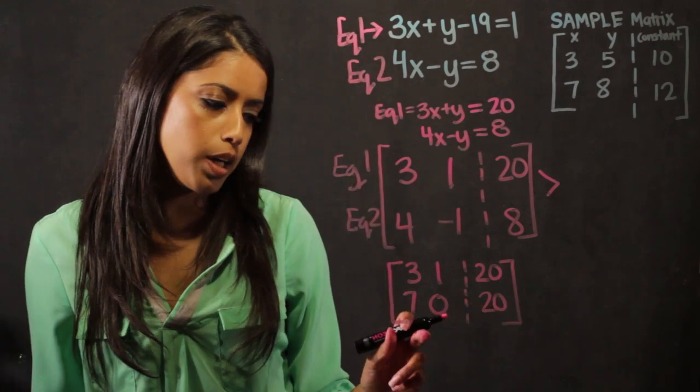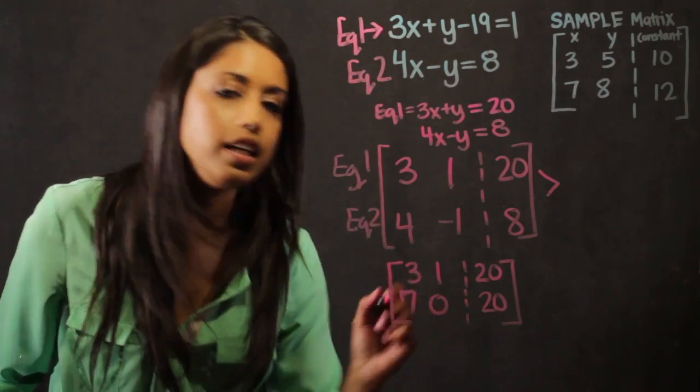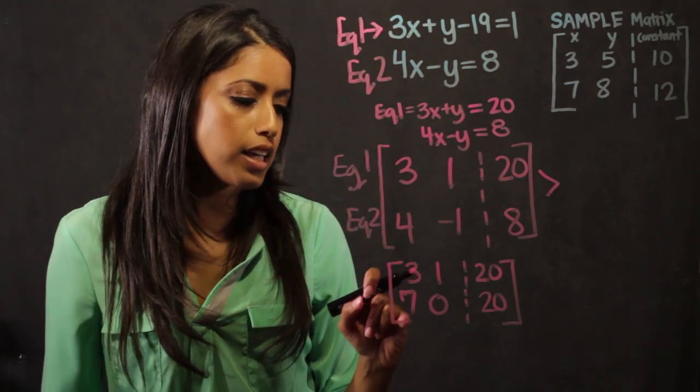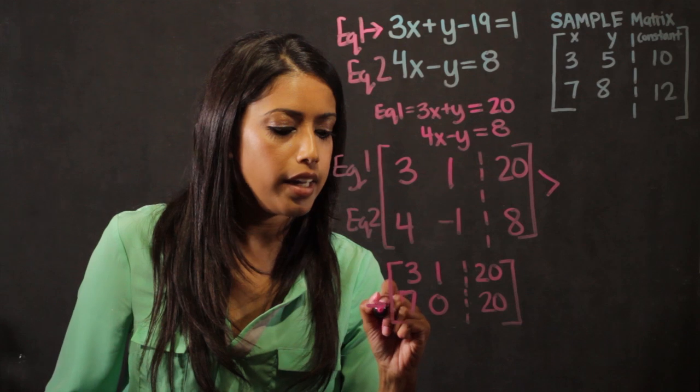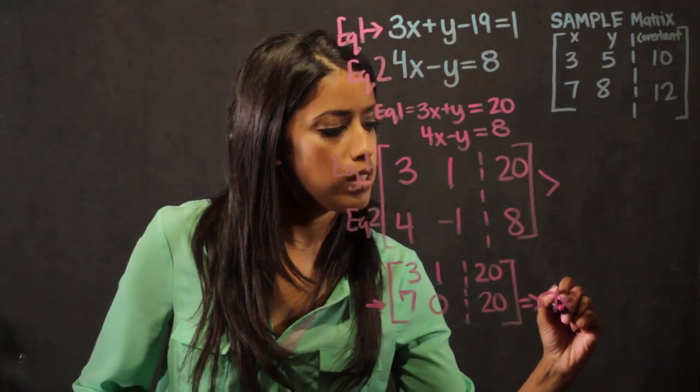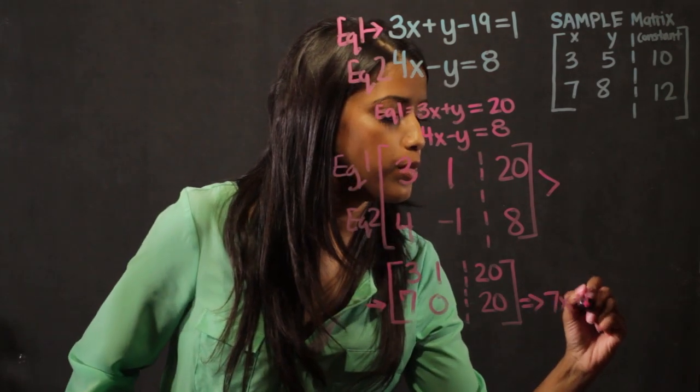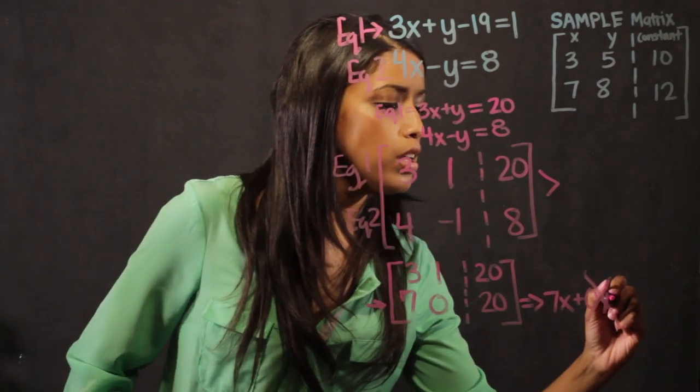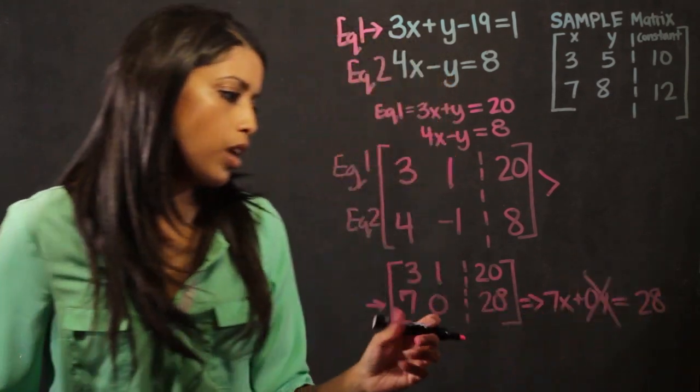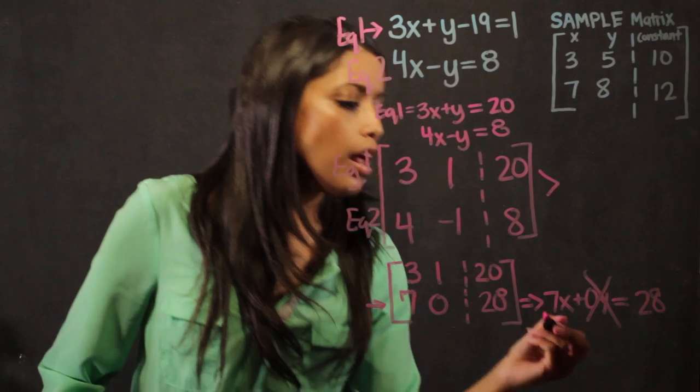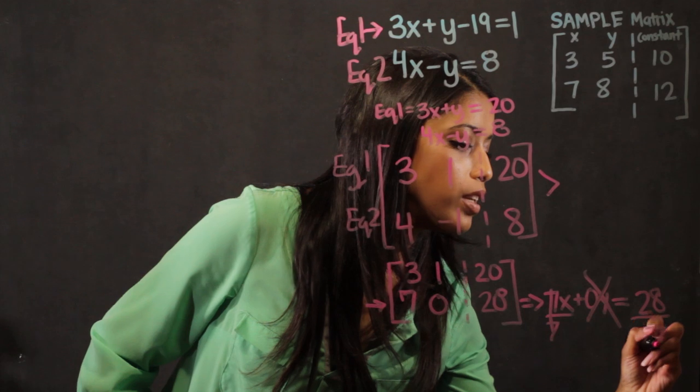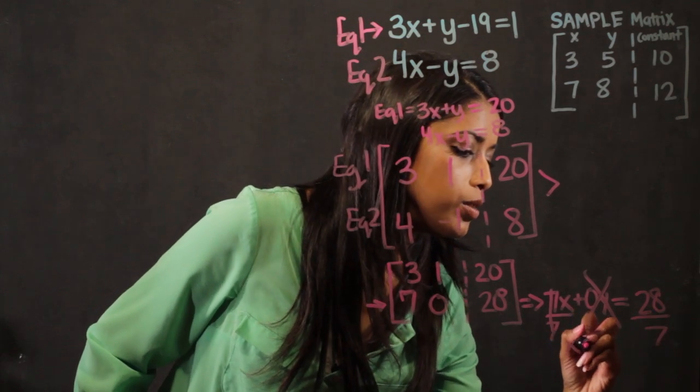Now that I have a 0 in a column, that means that I can easily solve my equation. Because the 7 here represents the x value, I can rewrite this bottom line as 7x plus 0y, because there's no y's anymore, so that pretty much cancels out, is equal to 28. Then to get x by itself, I simply have to just divide by 7, divide by 7, x is equal to 4.